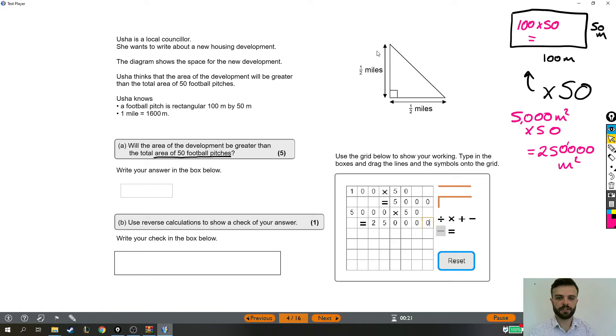If I was trying to find the area at the moment I would do base times height and then divide it by two, but the issue there is that I have miles and I'm trying to compare that with meters. So what I'm going to do instead is convert these to meters first, and to do that I'm going to need this conversion that we are told.